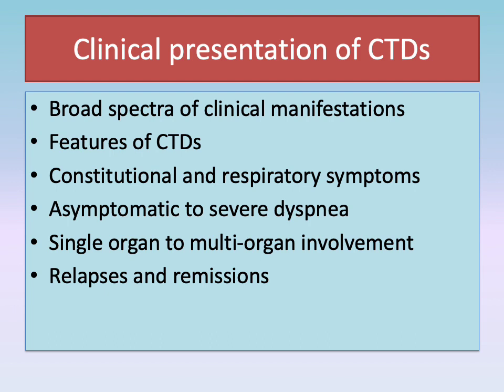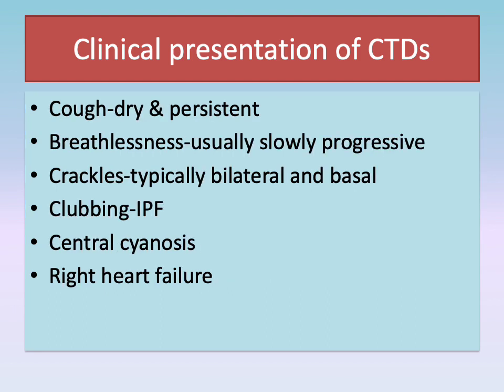CTD-ILD exhibits a broad spectrum of clinical manifestations, from asymptomatic to severe dyspnea, and from single organ respiratory involvement to multi-organ involvement. There may be features of underlying connective tissue disease and constitutional symptoms. Usually there are relapses and remissions during the course of the disease. Respiratory symptoms include dry persistent cough and slowly progressive breathlessness. On examination there are usually bilateral basal crackles, clubbing in idiopathic pulmonary fibrosis, central cyanosis, and right heart failure as a late feature.